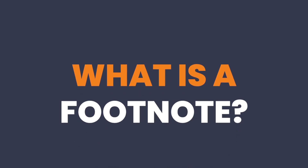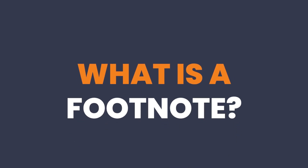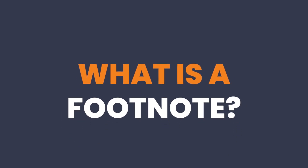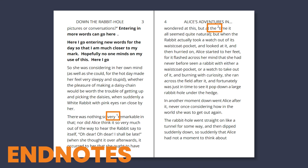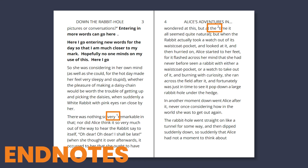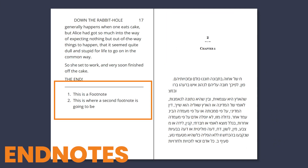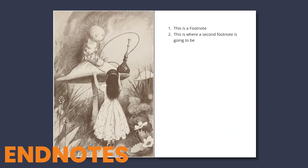If you don't know what that is, a footnote is where you can mark somewhere on a page and have a note show up at the bottom of that page, whereas an endnote is where you mark somewhere on a page and notes are left at either the end of the chapter or at the end of a book.